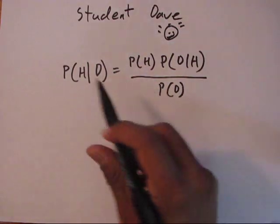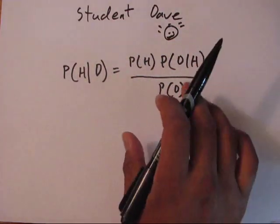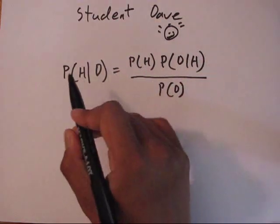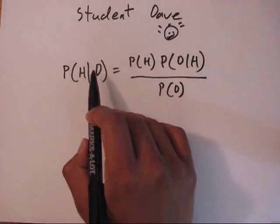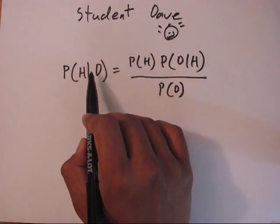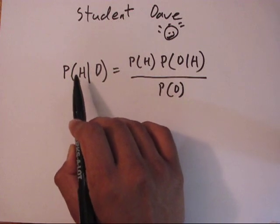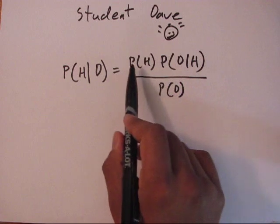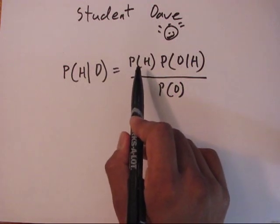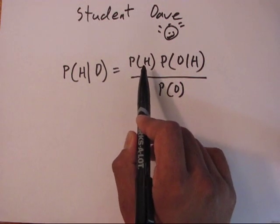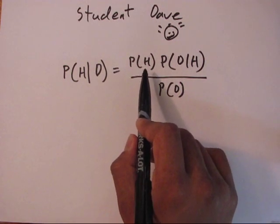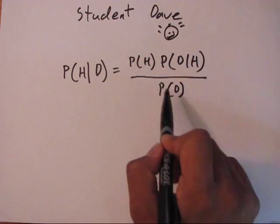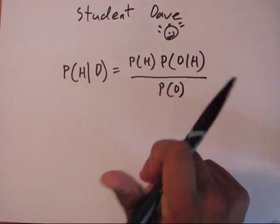And here's the equation we're working with. This is what was in the last video, and it's using Bayesian inference. Let's just repeat what we have here. We have our goal, which is to say, given the data, what is the likely state of the world or our hypothesis. And what we have is: to get that, we multiply our prior expectations — the probability of a hypothesis — times the probability of some data given a hypothesis, normalized by the probability of the data in general.